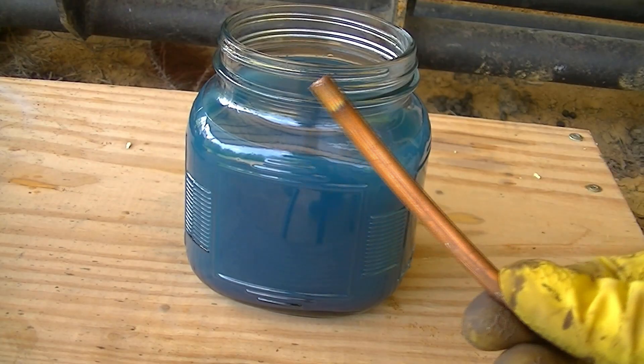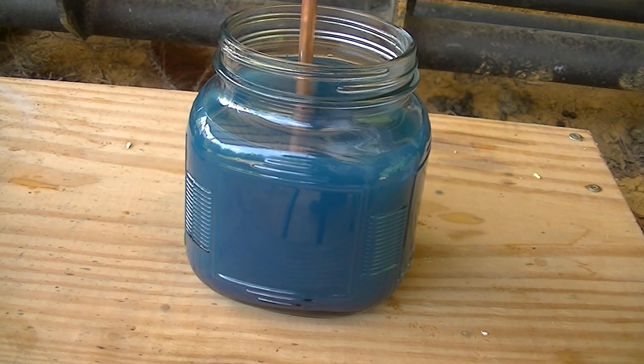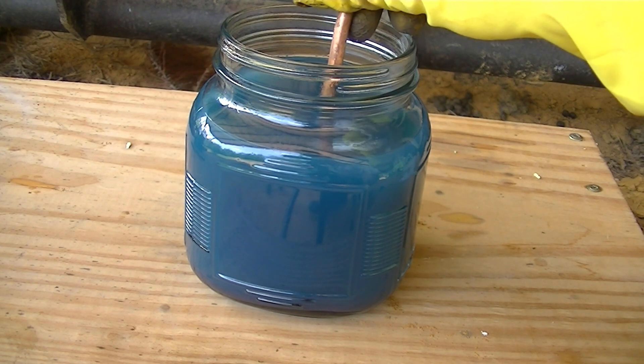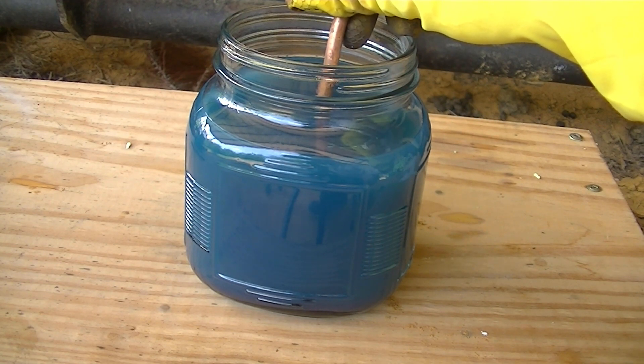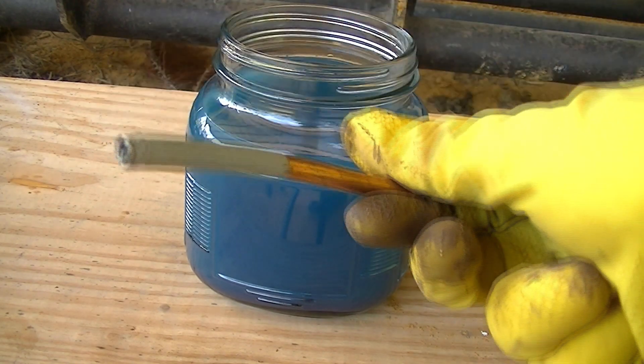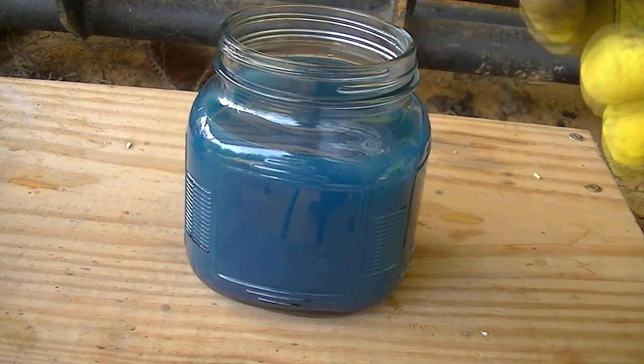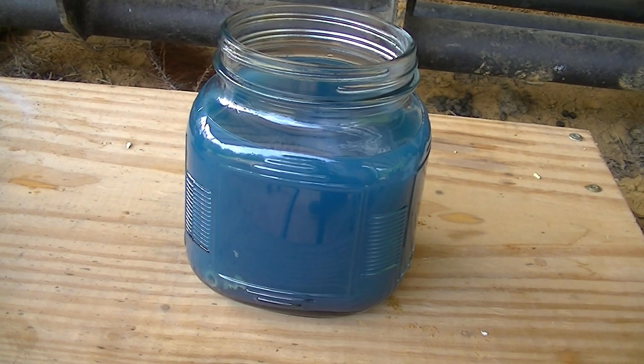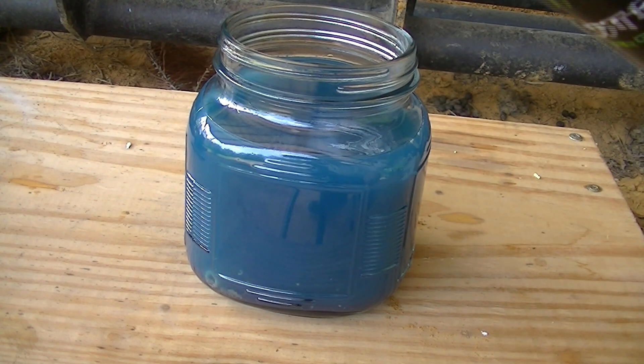Now it's time to precipitate out the silver from the solution. I'm going to do this by using copper. Now, this works because copper is more reactive than the silver, so it takes its place in the solution. This basically means that the copper will be dissolved and then the silver will crystallize in its place.